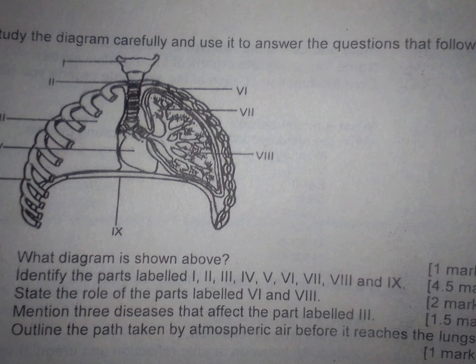Now let's look at the answers. Number 1: The name of your diagram above is the respiratory system in human. The parts are I is the larynx, II is the trachea, III is the lung.